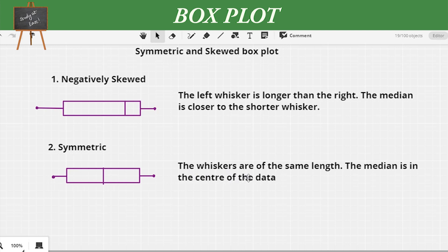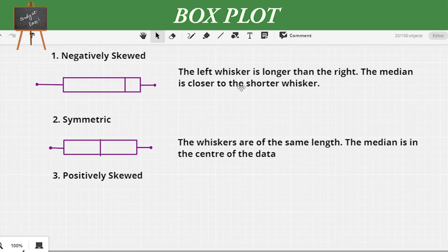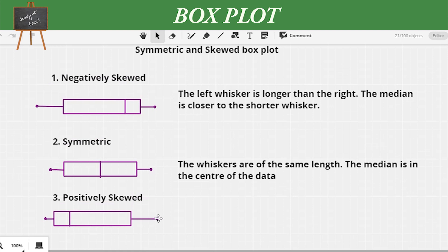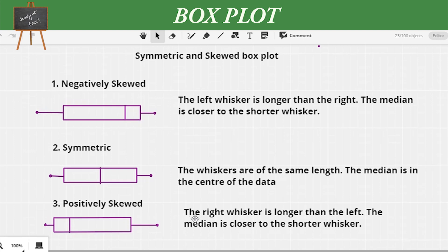The last one is positively skewed. This means the right whisker is longer than the left, and the median is closer to the shorter whisker. When positively skewed, the right tail of the distribution is longer than the left.